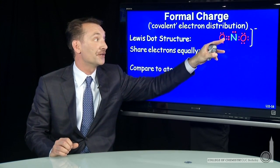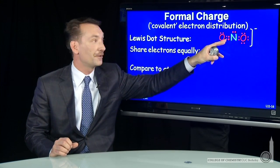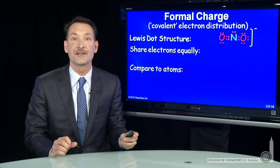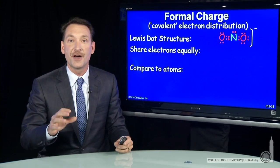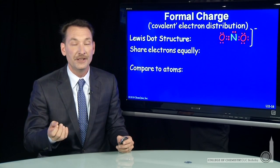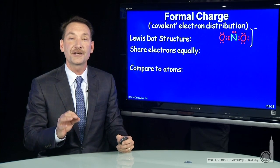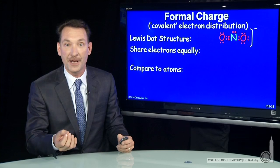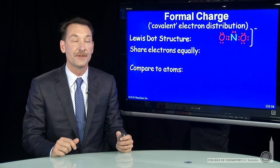So if there are bonded electrons — for instance, these four — they'll be shared between this oxygen and this nitrogen. You find the number of electrons around each atom in the molecule, and you compare that to the number of electrons around the atom as a neutral atom. The difference will be the formal charge.